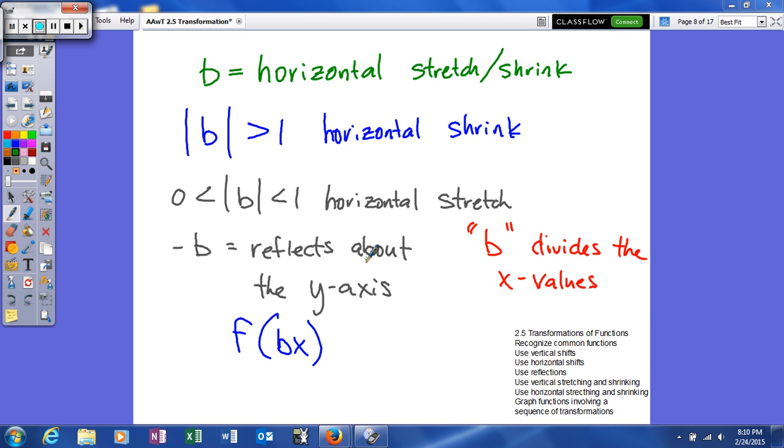Now, just like A, we also can have a reflection. So, if b is negative, it's going to reflect about the y-axis. And what that means is you're basically fold about the y-axis, and the points will go from one side of the y-axis to the other.